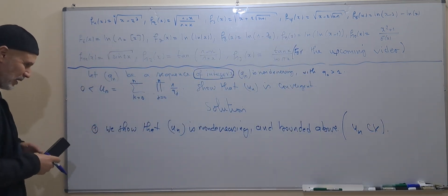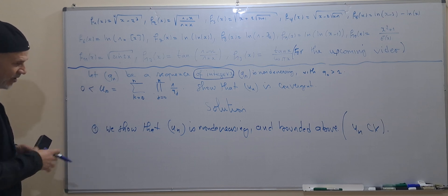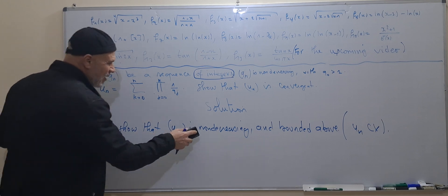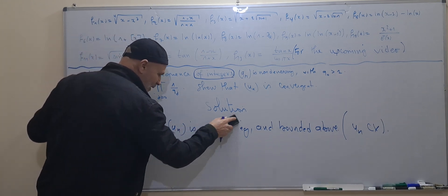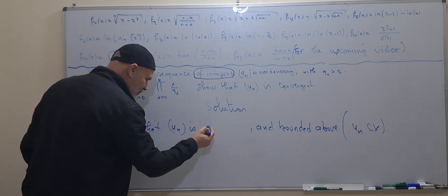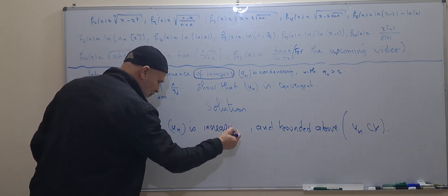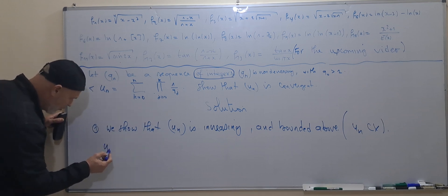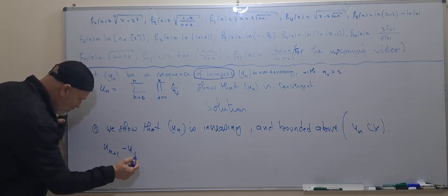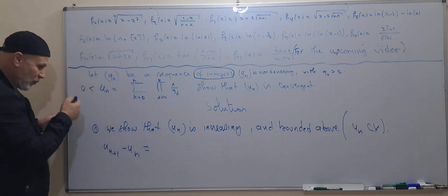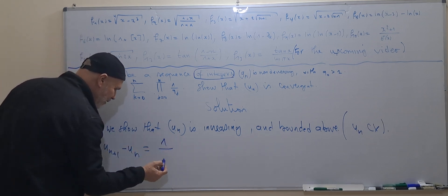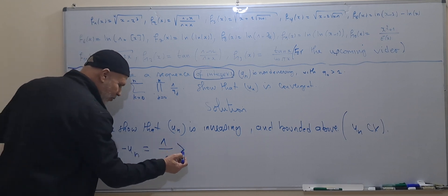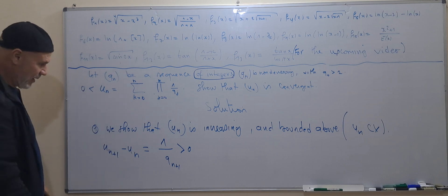u_n is actually strictly increasing. To see why, consider u_{n+1} minus u_n — this equals one divided by q_{n+1}, which is strictly greater than zero. This means u_n is increasing.